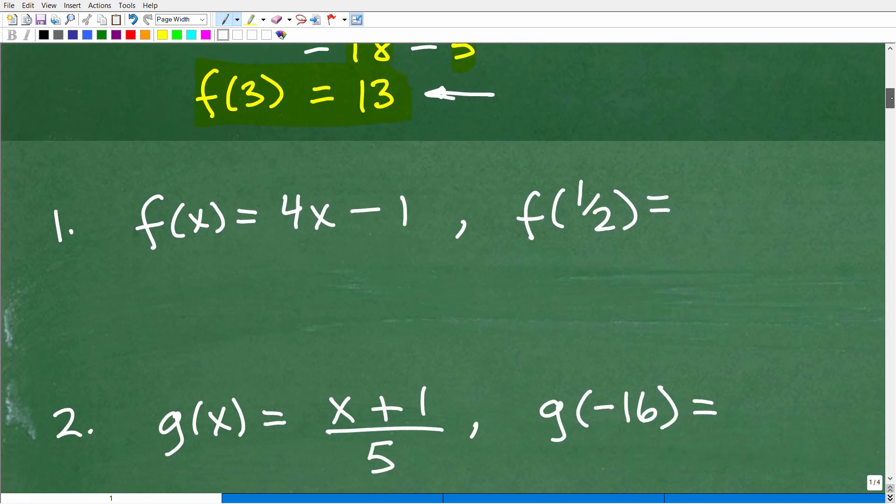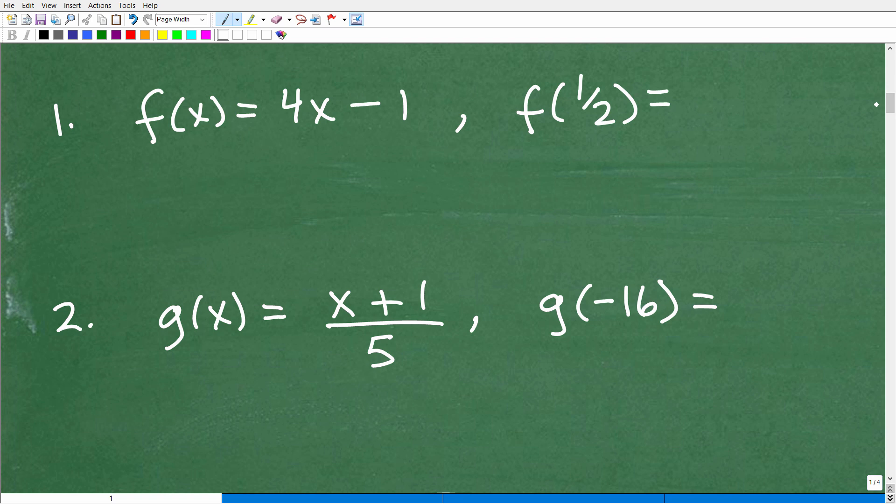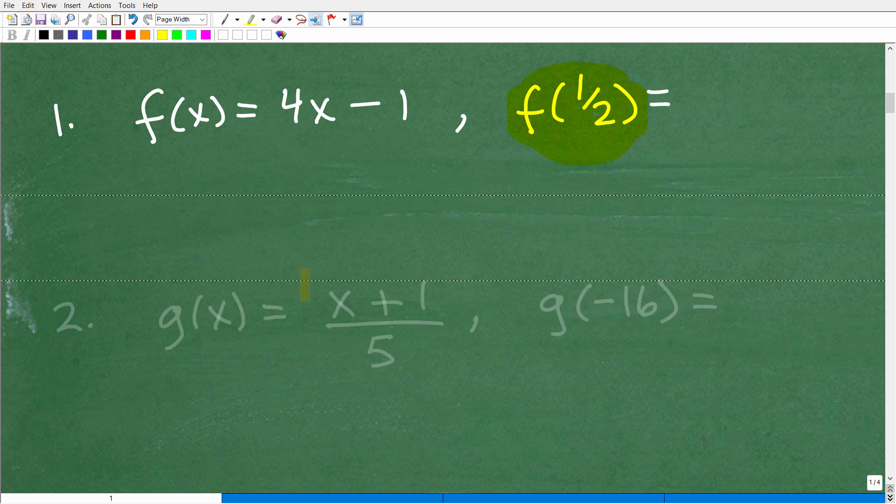So if you understand that, then you understand how to evaluate a function. But let's go ahead and do a few little practice prompts here. If you want to pause the video and play along, I think that's the best way to get the most value out of this exercise. Here we have f of x is equal to 4x minus 1. Let's go ahead and evaluate this function for 1 half, or we want to find f of 1 half.